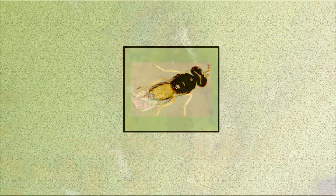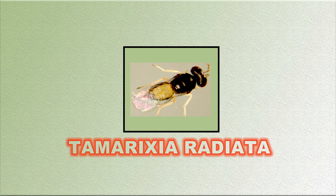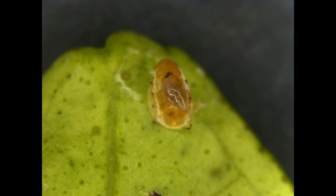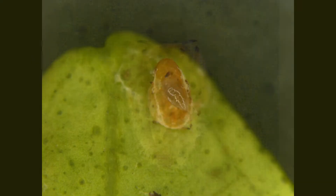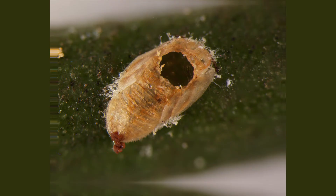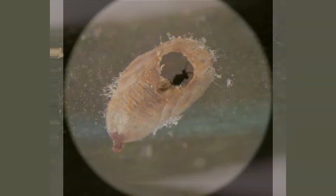Among the parasitoids, Tamarixia radiata, Cirrospilus caudistrigatus, and Citrostichus phyllocnistoides are the important ones. Tamarixia radiata is an ectoparasitoid of Asian citrus psyllid; the parasitoid larva feeds on the hemolymph of the psyllids. The larva pupates inside mummified nymphs and emerges in 9 to 14 days by making a hole through the thorax of the host insect.